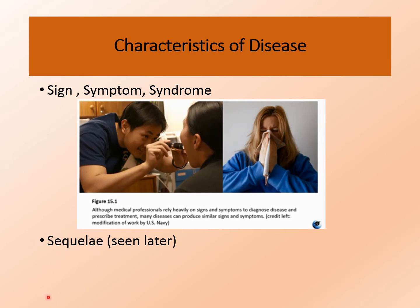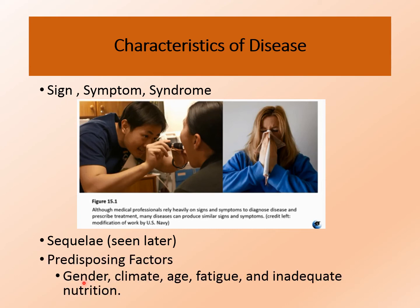There are some factors which make some people more prone to a disease. These are called predisposing factors, which include gender, climate, age, fatigue, and inadequate nutrition. For example, measles is more commonly seen in children.